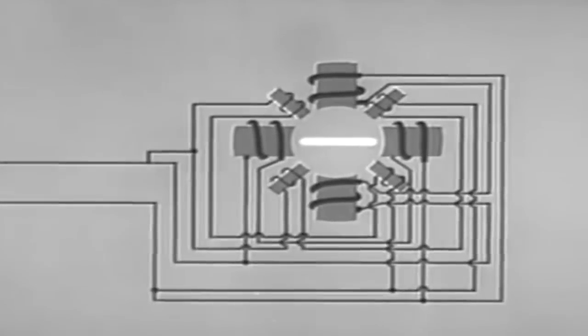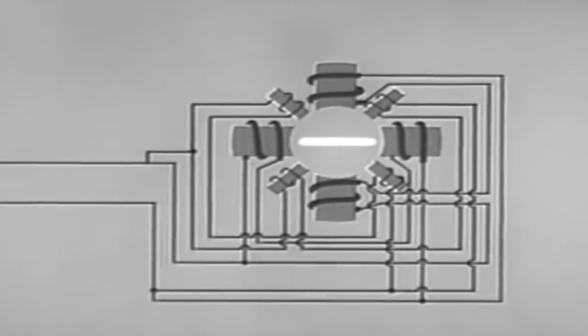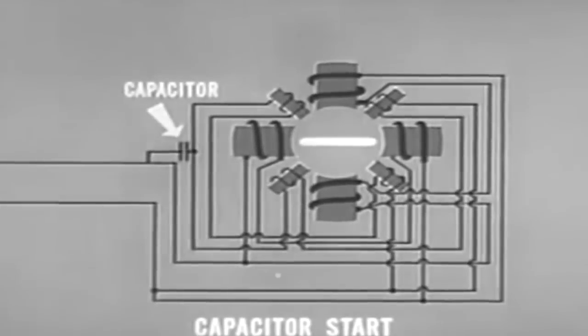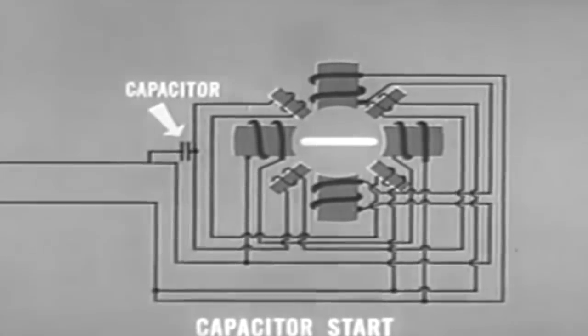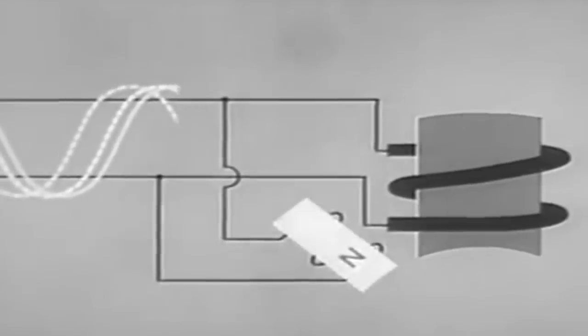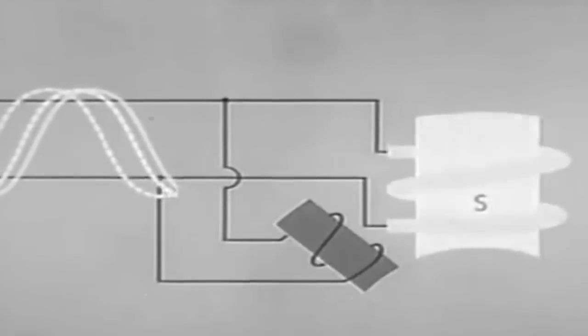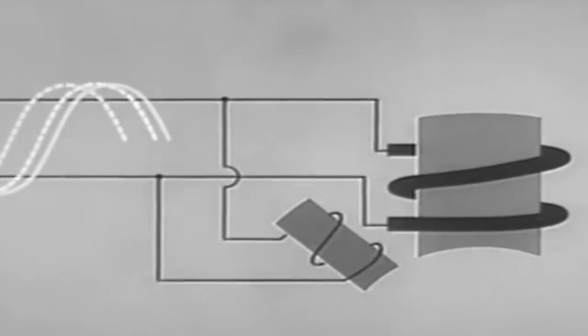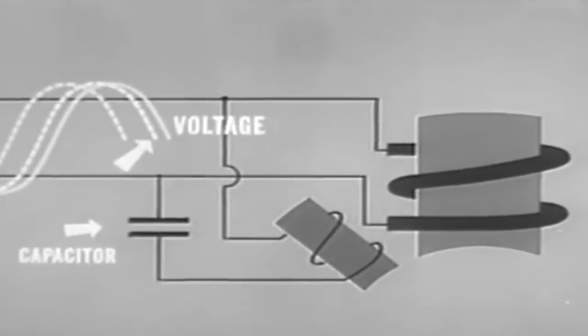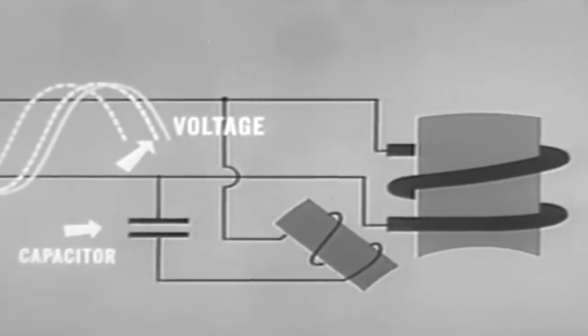A third method for starting single-phase induction motors is the use of starter windings with high-capacity electrolytic capacitors. We saw in our last example how a phase difference was developed by the use of starter windings. Now when a capacitor is added in series with a starter winding, it offsets the inductance causing an even greater phase shift between the two currents.